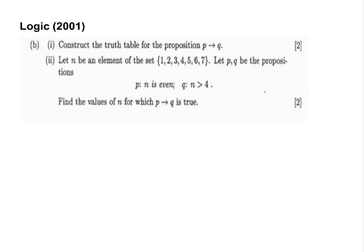The first thing we're going to do here is construct the truth table for the proposition P implies Q. This down here is P implies Q, or if P then Q.